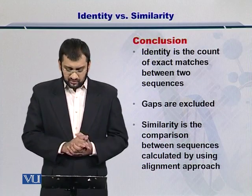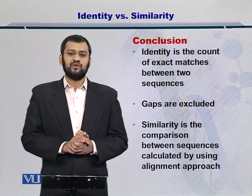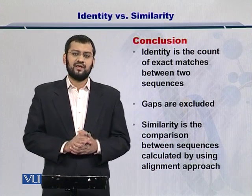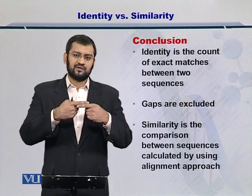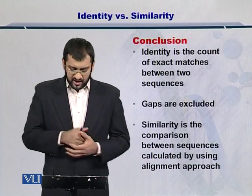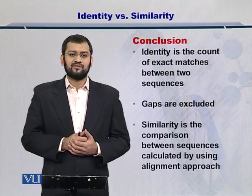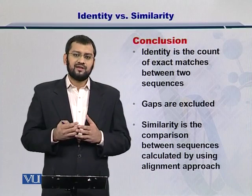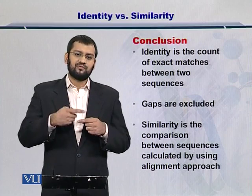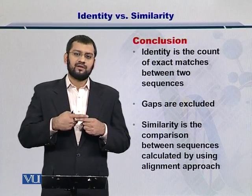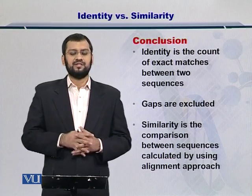In conclusion, identity is the count of nucleotide or amino acid matches that are exactly matching between the two sequences, with gaps excluded from this exercise. Similarly, similarity is a different layer in which you compare the two sequences after aligning them with each other.